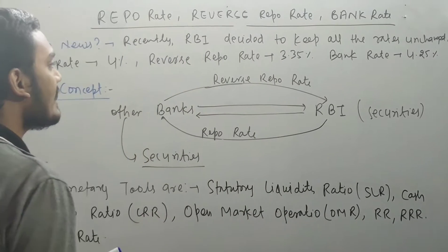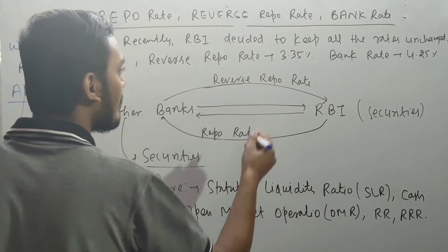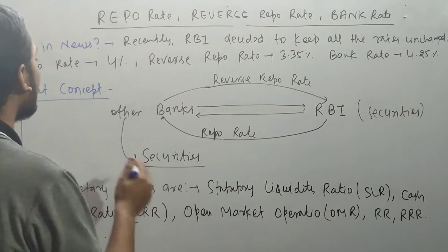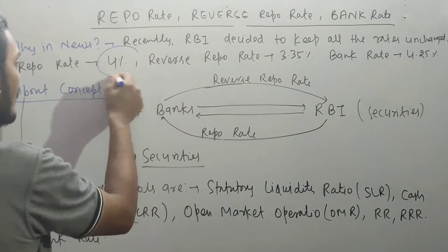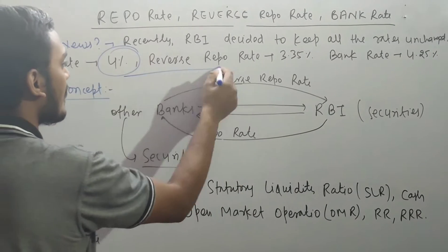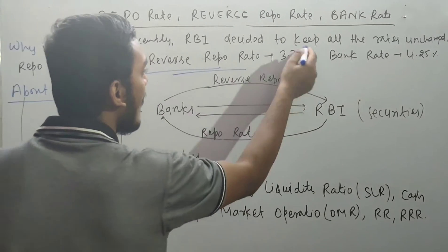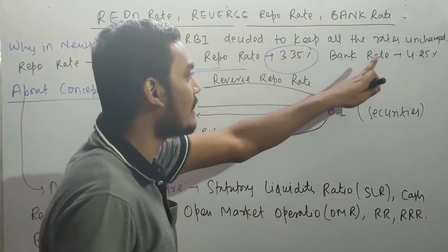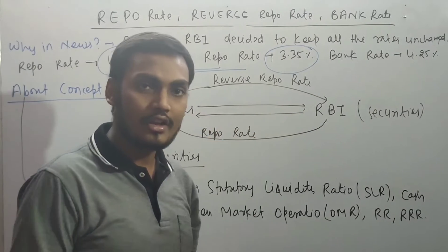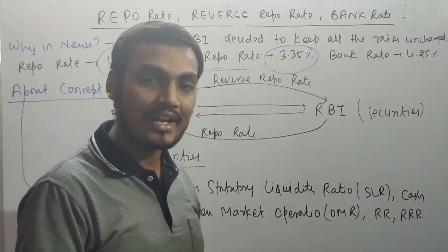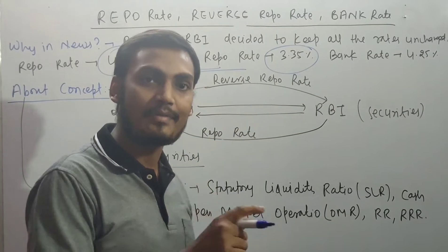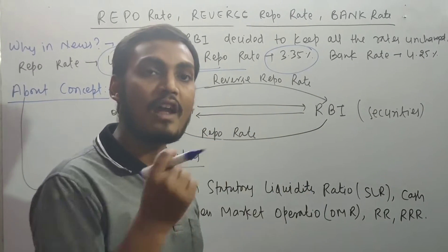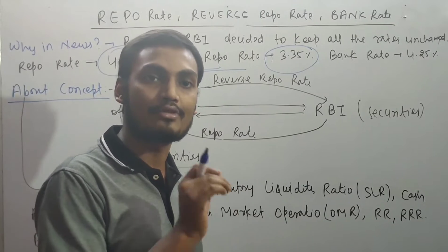As mentioned, the RBI recently decided to keep all the rates unchanged: Repo Rate at 4%, Reverse Repo Rate at 3.35%, and Bank Rate at 4.25%. You need to understand the concepts behind these rates, as questions come directly from the concept.